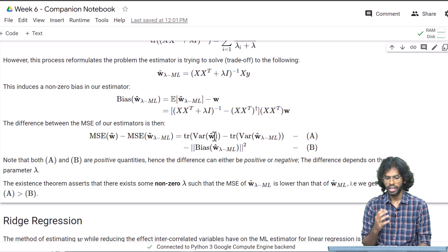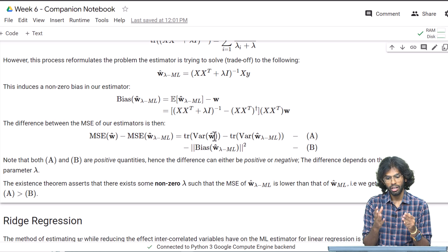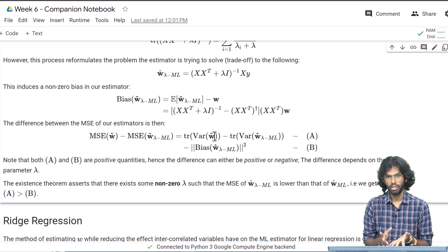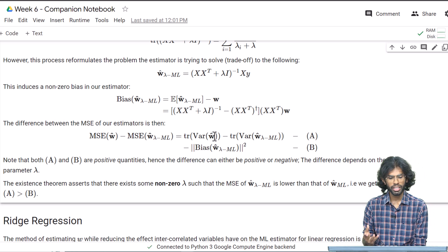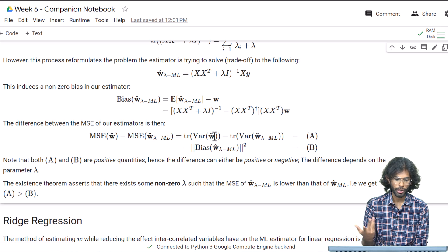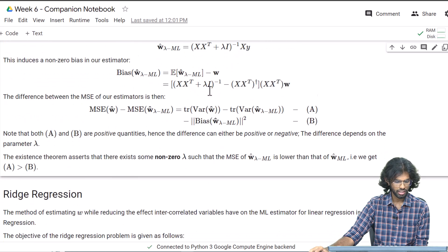However, the existence theorem asserts that there exists some non-zero λ for which this difference is positive. In other words, we can find a λ such that it gives a lower MSE compared to our normal w-hat. That's why we are interested in this ridge solution—one of the reasons.